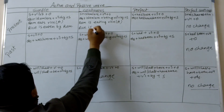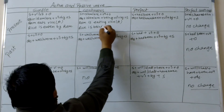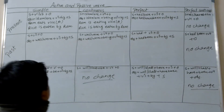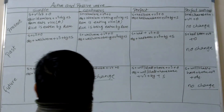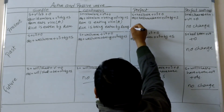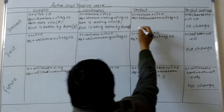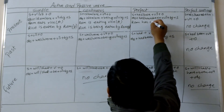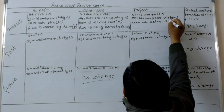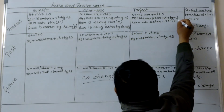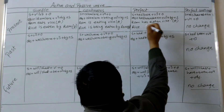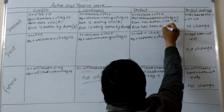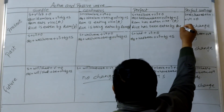Rice is eaten by Ram. And next, in present perfect, the active voice: Ram has eaten rice. This is the active voice. Now let's say it in passive voice: rice has been eaten by Ram.